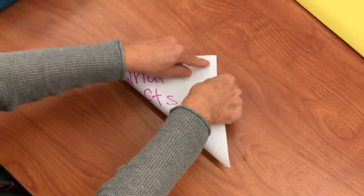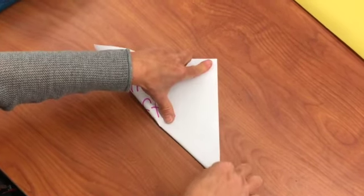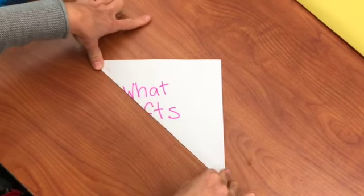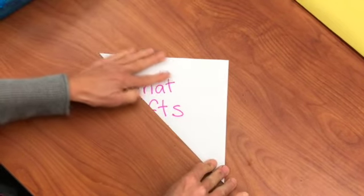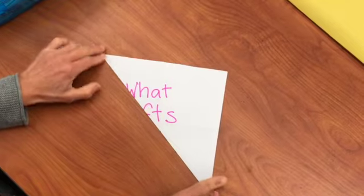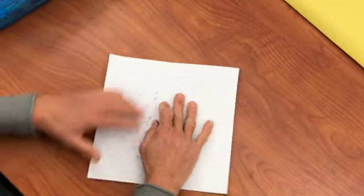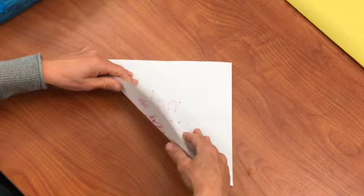Match up the edges, match up that corner, get it as close as you can. Crease it. The more precise your folds are, the better your crane will come together.